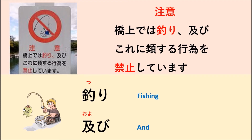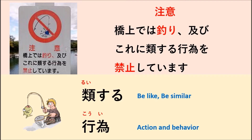Next, we have the word tsuri. Tsuri means fishing. We also have the word oyobi. Oyobi means and. And we also have the word ruisuru. Ruisuru means to be similar or be like.